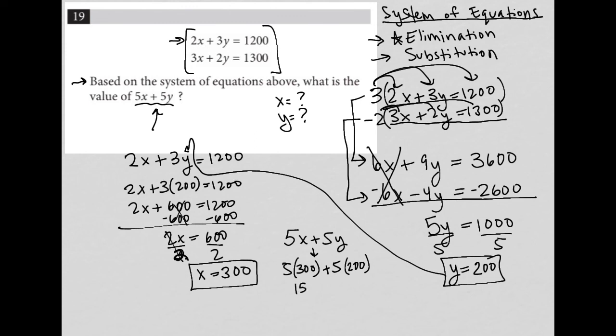5 times 300 is 1,500, and 5 times 200 is 1,000. Those two added together is 2,500, and that is the answer.